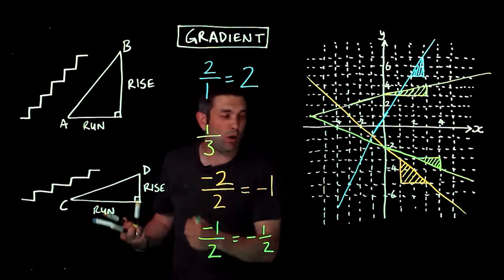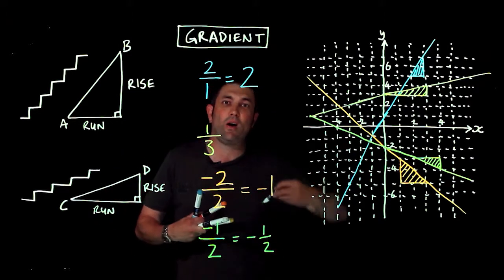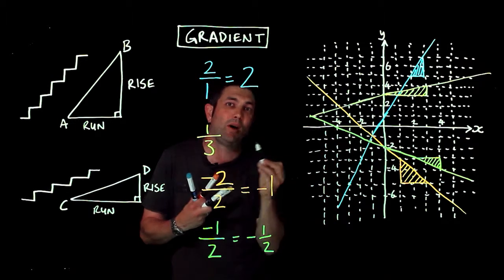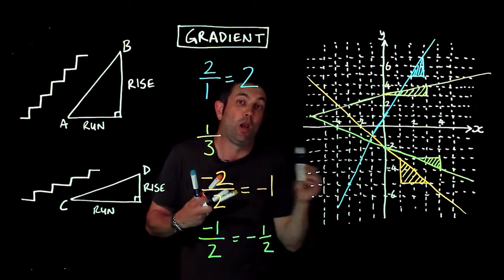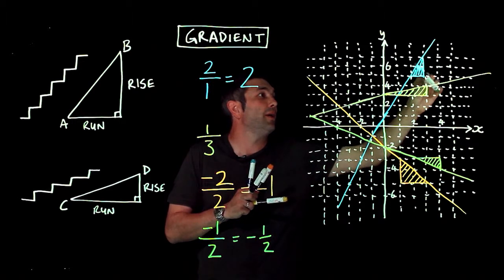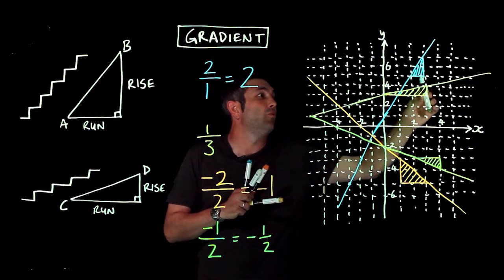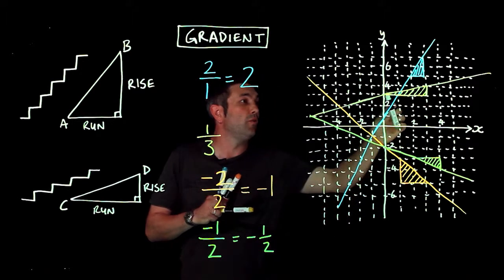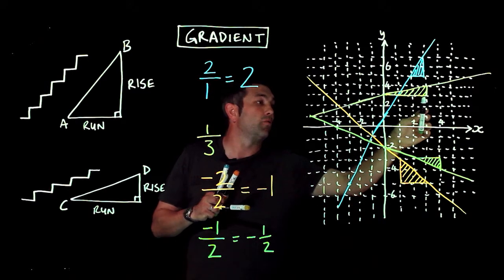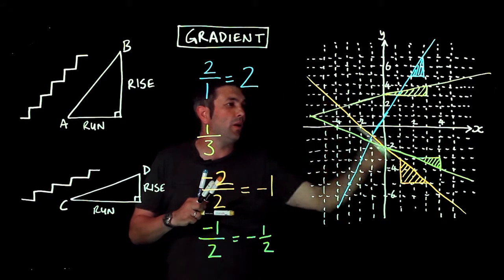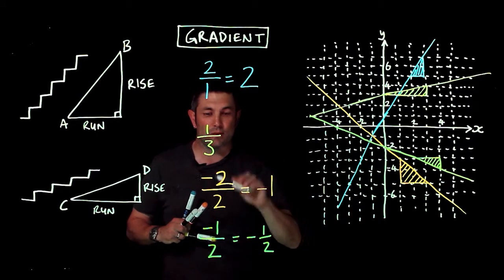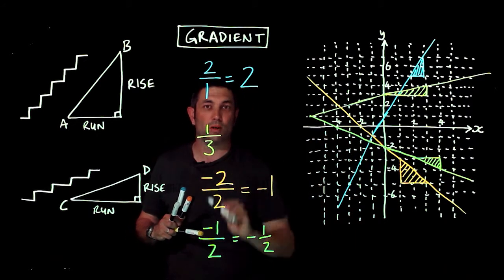So you're looking at the rise over the run each time — how far up the line has gone between two points, divided by how far it's gone along in the same period. The rise is two, the run is one; or the rise is one, the run is three. And don't forget, when lines are going down this way, you're falling, so the rise is negative.